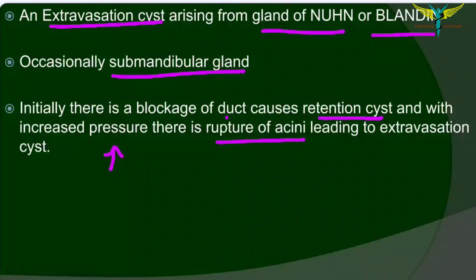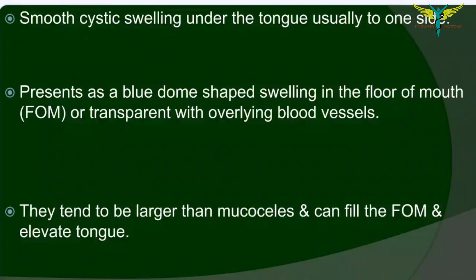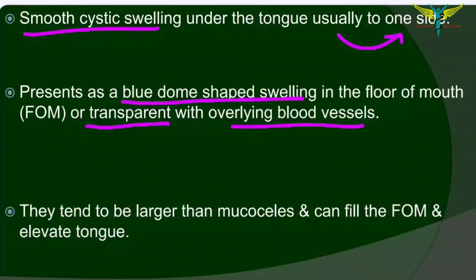Ranulas are smooth cystic swellings under the tongue, usually seen on one side. They are presented as blue dome-shaped swellings in the floor of the mouth, or they can also be transparent with overlying blood vessels. Usually ranulas tend to be larger than mucoceles.